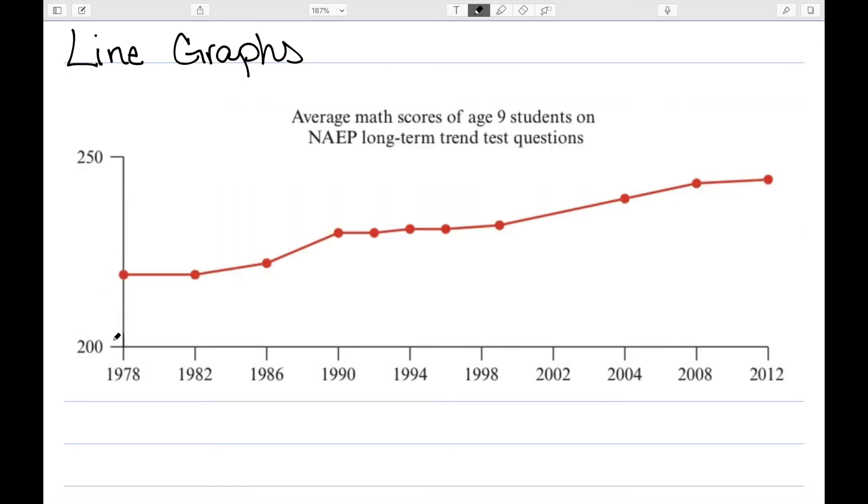Next we have line graphs. A line graph is a graph in which adjacent data points are connected by a line. Here's an example of a line graph. We had individual points representing different years, and then we just connect the dots.